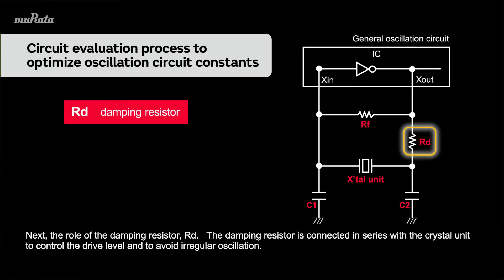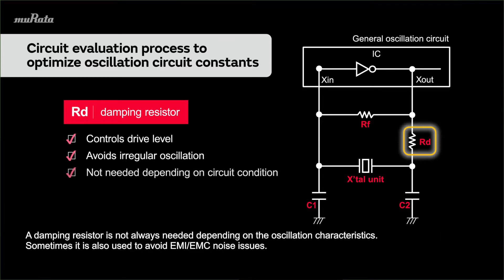Next, the role of the damping resistor RD. The damping resistor is connected in series with the crystal unit to control the drive level and to avoid irregular oscillation. A damping resistor is not always needed depending on the oscillation characteristics. Sometimes it is also used to avoid EMI and EMC noise issues.